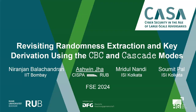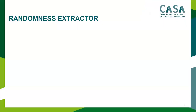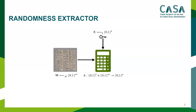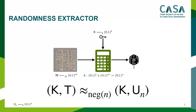So what is a randomness extractor? It is an algorithm that takes a uniformly distributed seed k and a moderately random input m and produces a small output t. We want this output to be statistically close to a uniform distribution, up to some small epsilon.